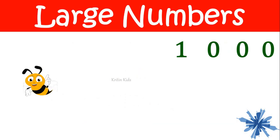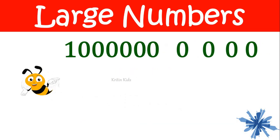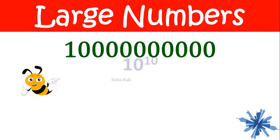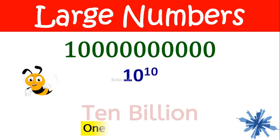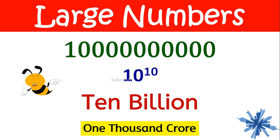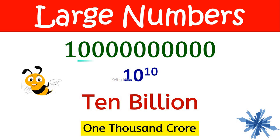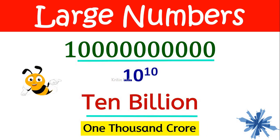If I add one more zero, it becomes ten billion, which is also called as one thousand crore. That is one followed by ten zeros gives us ten billion.